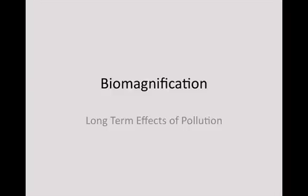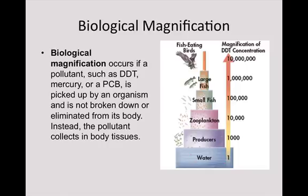In this video we're going to talk about biomagnification — the long-term effects of our pollution and how they build up in ecosystems. Biomagnification occurs if a pollutant such as DDT, mercury, or PCB is picked up by an organism and is not broken down or eliminated from its body. Normally your body will deal with chemicals and process them out over time, but these particular chemicals either take a long time to process out or are unable to be processed out.